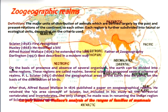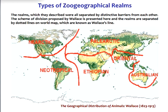On the basis of presence and absence of several organisms, the earth can be divided into regions called realms. Alfred Russell Wallace in 1876 published a paper in which he retained the six-area concept proposed by Sclater. The only change he made was renaming the Indian region of Sclater into the Oriental region.